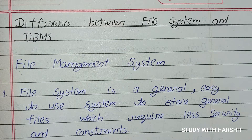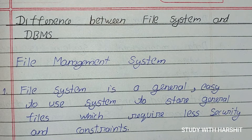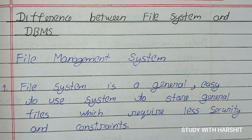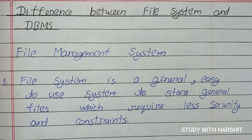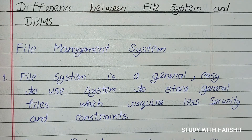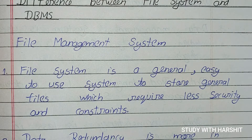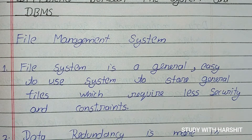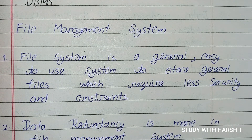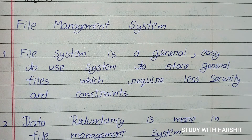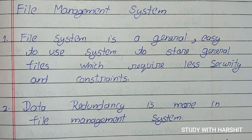Hello friends, welcome to Study with Harsheed. Today I am going to share with you the difference between file system and DBMS. File system management: a file system is a general, easy-to-use system to store general files which require less security and constraint.